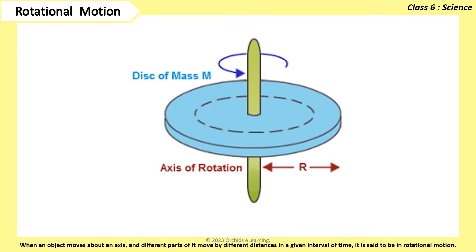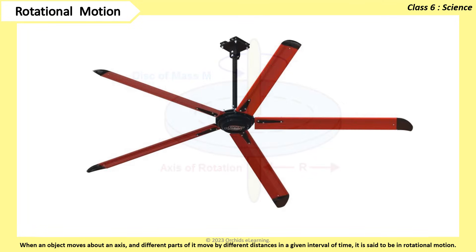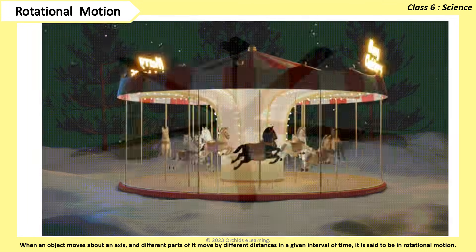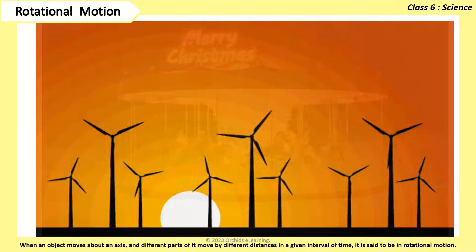When an object moves about an axis, and different parts of it move by different distances in a given interval of time, it is said to be in rotational motion. Examples: rotating fan, merry-go-round, windmill, etc.